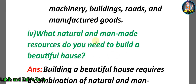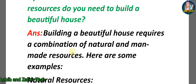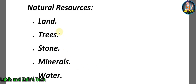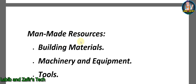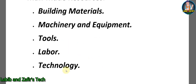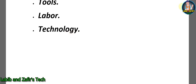Fourth descriptive question: What natural and man-made resources do you need to build a beautiful house? Answer: Building a beautiful house requires a combination of both. Natural resources include land, trees, stones, minerals, and water. Man-made resources include building materials, machinery and equipment, tools, labor, and technology.